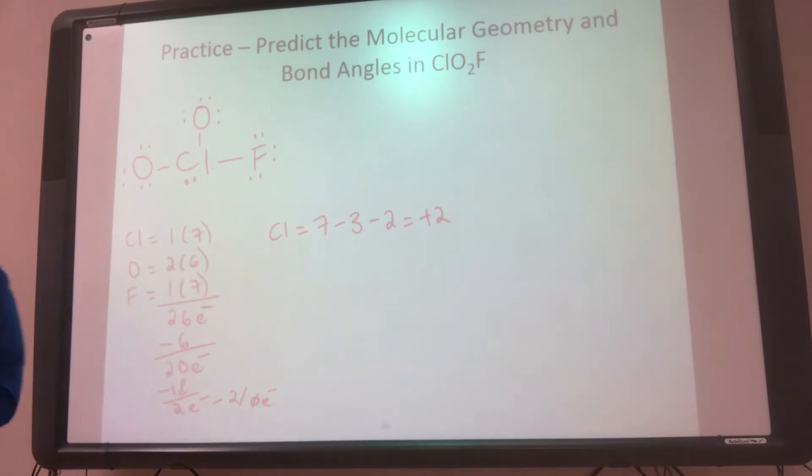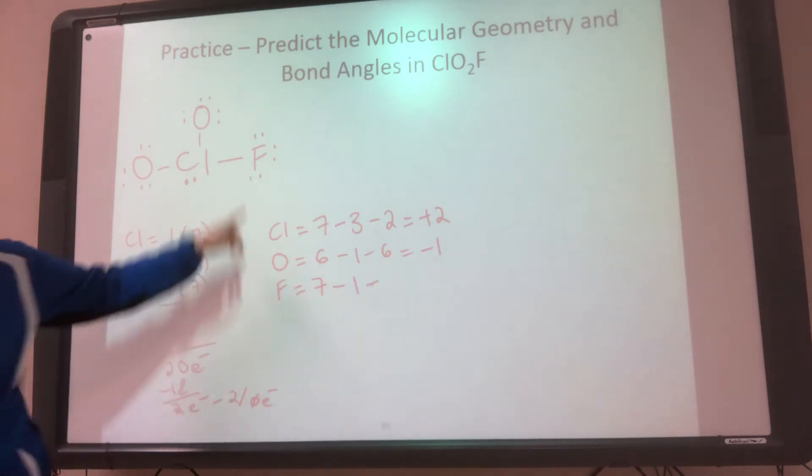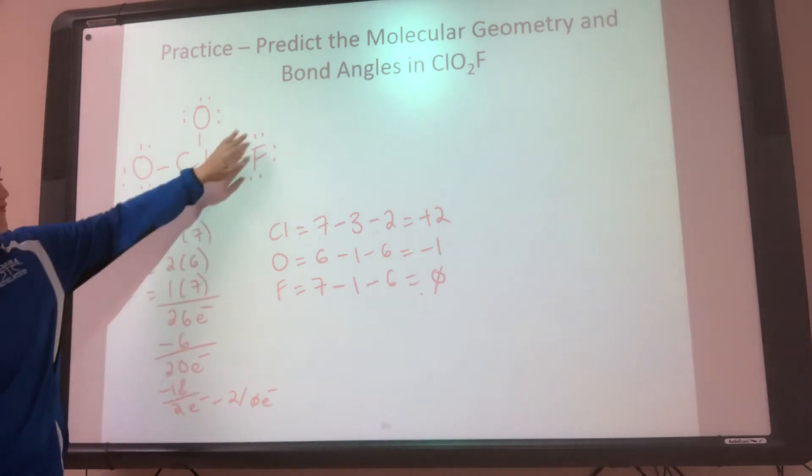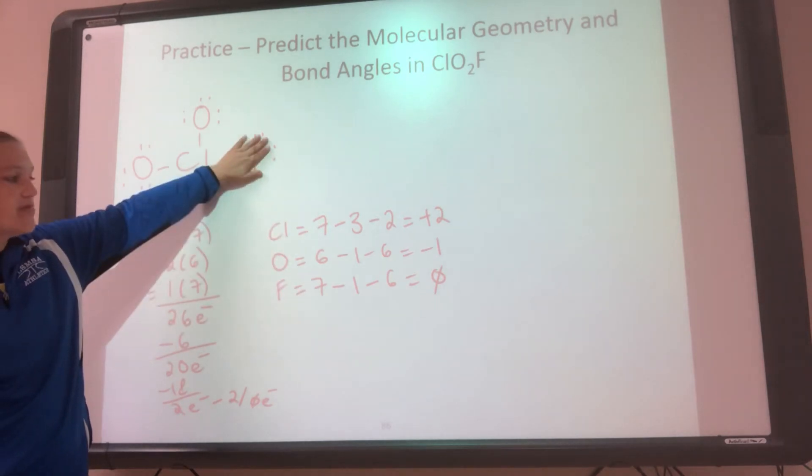He would like 2 double bonds, but where can I get it from? So let me do the oxygen and the fluorine. Oxygen has 6 valence. He has 1, 2, 3, 4, 5, 6 on him and 1 bond. So he has a negative 1. They both would be the same. Fluorine has 7 valence, 1 bond, and 1, 2, 3, 4, 5, 6 electrons. So he has a 0 formal charge. So the fluorine says, don't mess with me, leave me alone.